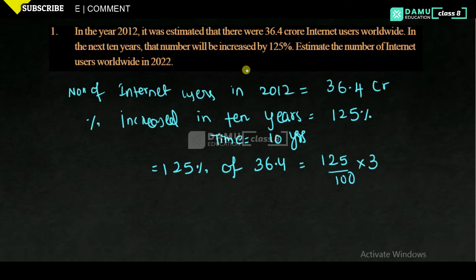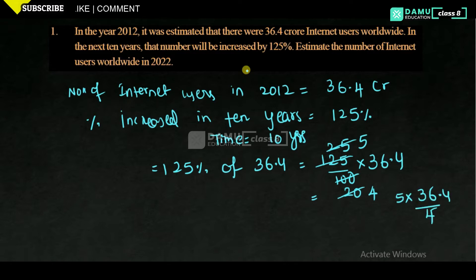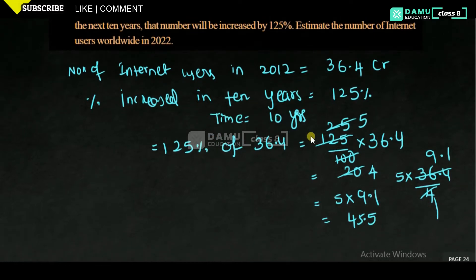We can simplify this as 5 into 36.4 by 4. So 36.4 divided by 4 gives 9.1, then 9.1 into 5 gives 45.5. So 45.5 crores is the amount increased.